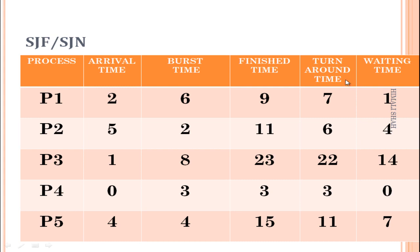Turnaround time equals finish time minus arrival time. So: P1 = 9−2 = 7, P2 = 11−5 = 6, P3 = 23−1 = 22, P4 = 3−0 = 3, P5 = 15−4 = 11. This gives all turnaround times.